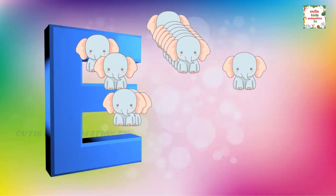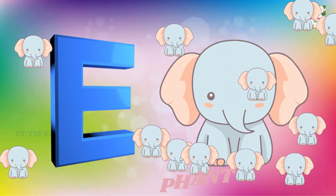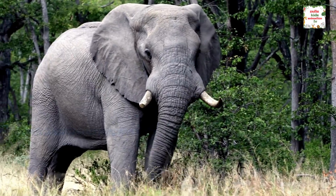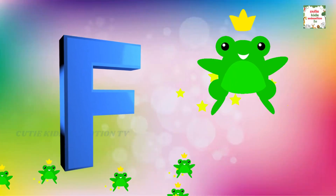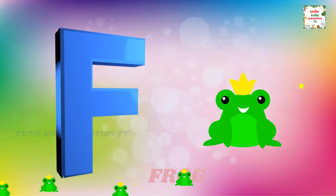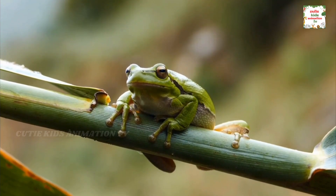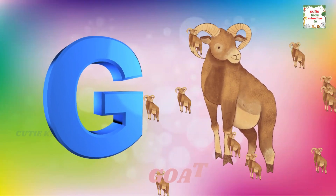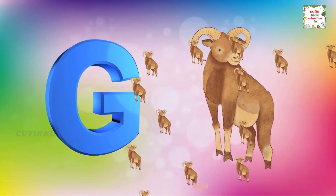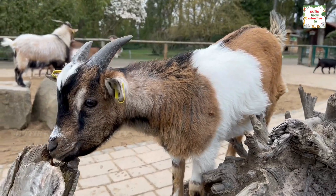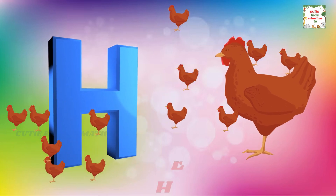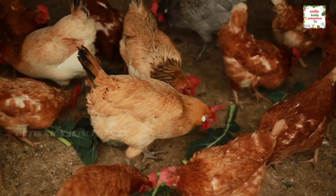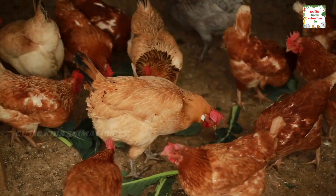E is for Elephant, E-E-Elephant. F is for Frog, F-F-Frog. G is for Goat, G-G-Goat. H is for Hand, H-H-Hand.